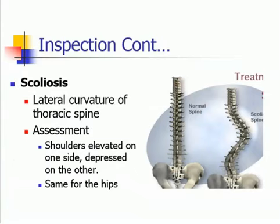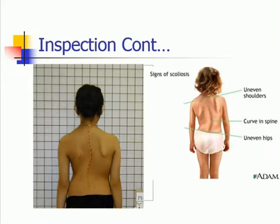Disorders of the spine include scoliosis, which is a lateral curvature of the thoracic spine. On assessment, the shoulders are elevated on one side and depressed on the other side, and the same applies for the hips. As the picture shows, the signs of scoliosis include uneven shoulders, a curve in the spine, and uneven hips.